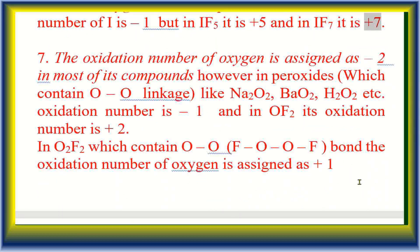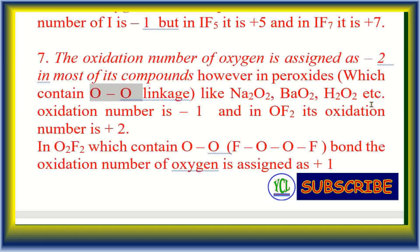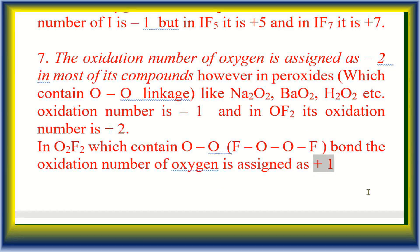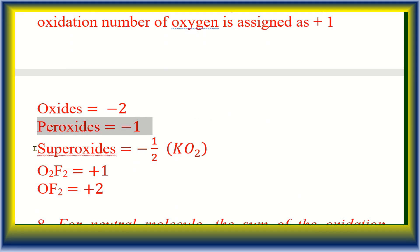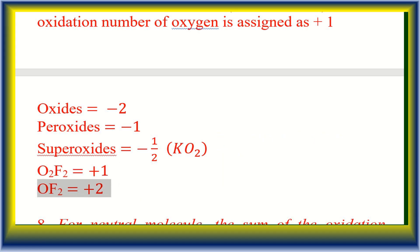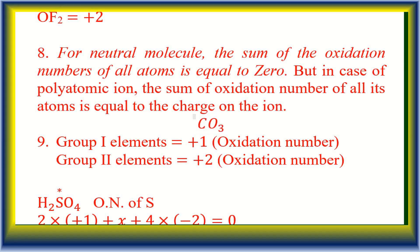Rule 7: The oxidation number of oxygen is −2 in most compounds. However, in peroxides (O–O linkage) like Na₂O₂, H₂O₂, it is −1. In OF₂ it is +2. In O₂F₂ it is +1. In superoxides (KO₂) it is also noted. So: oxide = −2, peroxide = −1, O₂F₂ = +1, OF₂ = +2.